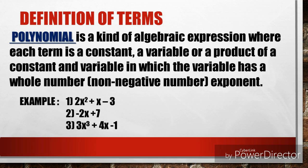We have examples. Number 1: 2x squared plus x minus 3. Number 2: negative 2x plus 7. And number 3: 3x cubed plus 4x minus 1.